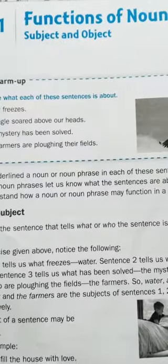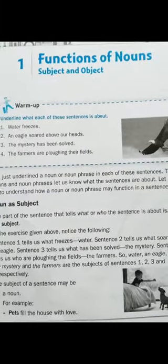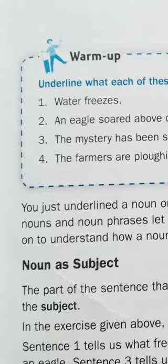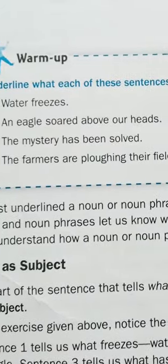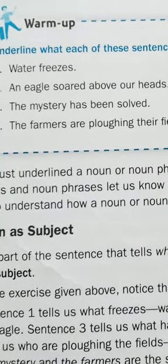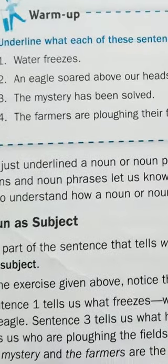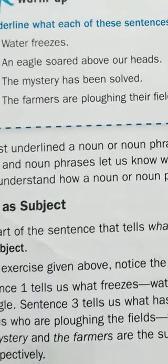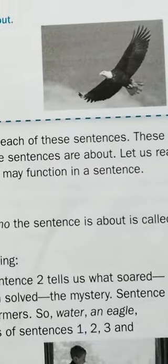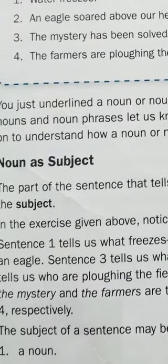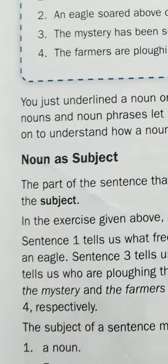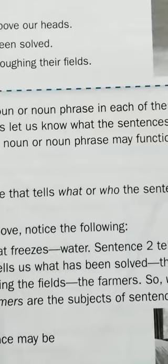Dear students, functions of nouns — subject and its object. Before we study, we will discuss about four sentences. Please pay attention. Underline what each of these sentences is about. First: water fridges. Second: an eagle swirled above our heads. Third: the mystery has been solved. Fourth: the farmers are plowing their fields. You just underline a noun or a noun phrase in each of these sentences. These nouns and noun phrases let us know what the sentences are about. Let us read on to understand how a noun or noun phrase may function in sentences.